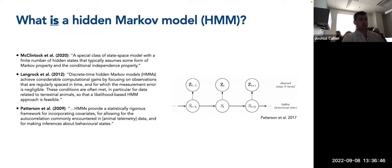Patterson and colleagues (2009) state that hidden Markov models provide a statistically rigorous framework for incorporating covariates, allowing for the autocorrelation commonly encountered in animal telemetry data, and for making inferences about behavioral states. Unlike the state space models we ran initially, this talks about incorporating covariates into behavioral state estimation and explicitly accounting for autocorrelation via the Markov property. With the move persistence mixed effects models package MPM, you can include effects of covariates on your state space model after the fact.